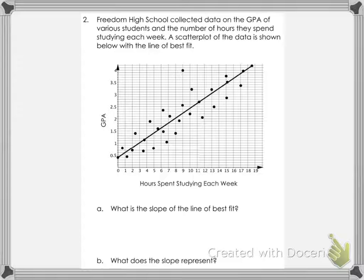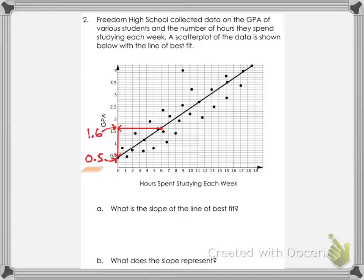Freedom High School collected data on the GPA of various students and the number of hours they spend studying each week. A scatter plot of the data is shown with the line of best fit. Pausing the video and trying to answer before I explain is a good idea. Question A: what is the slope of the line of best fit? The rise starts at 0.5 and ends at 1.6, so the rise was 1.1. The run started at 0 and ended at 6, so the run was 6. That gives 1.1 over 6.